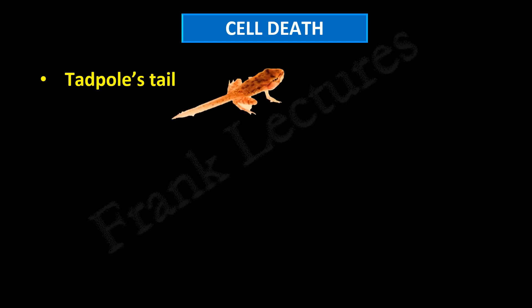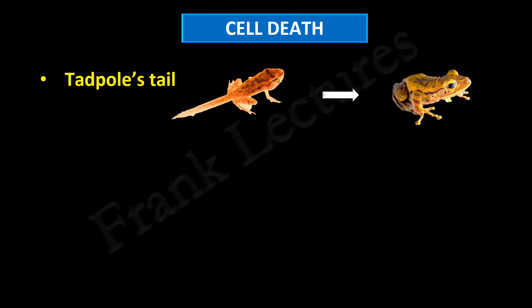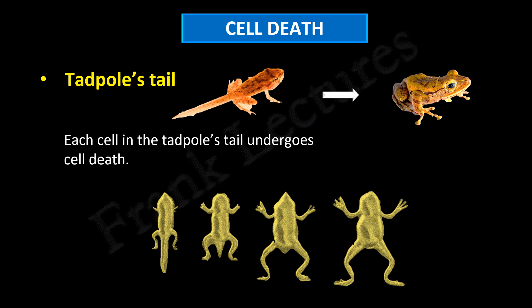The second example is the tadpole's tail. We generally believe that when a tadpole turns into a frog, the tadpole's tail simply falls off, as in the case of lizards. But that is not true. What actually happens is that each cell in the tadpole's tail undergoes cell death in such a manner that allows all the proteins, lipids, and nucleotides to be reused.